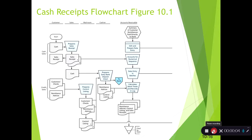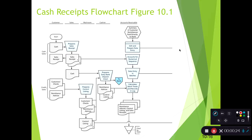Here's an example of a cash receipts process shown in a flowchart, with the different departments and functions that are involved. We can see some important controls here. Cash is coming from the customer, and you have a sales department that's actually preparing a receipt.